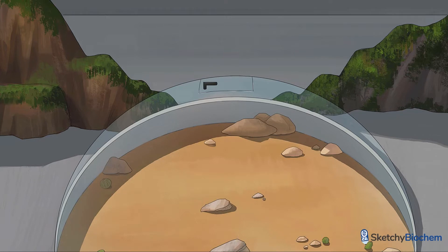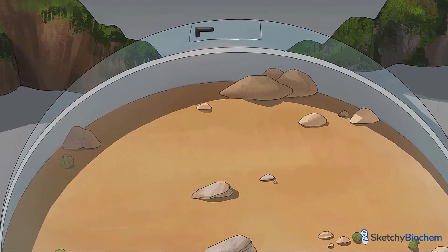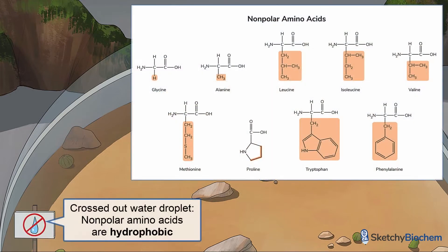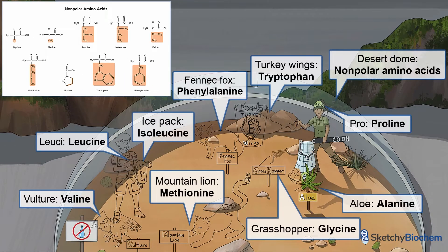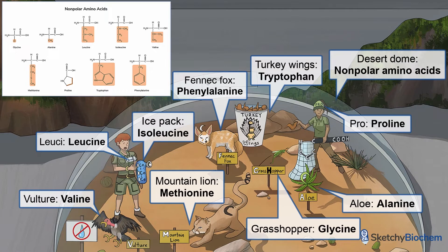First, we're going to check out the desert exhibit to detail the non-polar amino acids. The non-polar amino acids are hydrophobic, or water-fearing, as shown by the sign of a crossed-out water droplet. We'll represent all the non-polar amino acids inside this glass biodome. Without further ado, we have a glycine grasshopper, an alanine aloe plant, zookeeper Lucy for leucine, an isoleucine ice pack, a valine vulture, a methionine mountain lion, a very professional proline pro, one bucket of tryptophan turkey wings, and a phenylalanine fennec fox. For those keeping score at home, that's four animals, two humans, one burn-soothing plant, one burn-soothing inanimate object, and one bucket of dead animal.